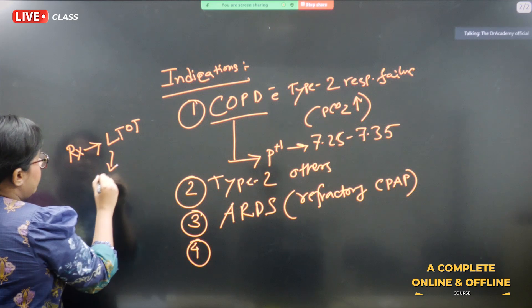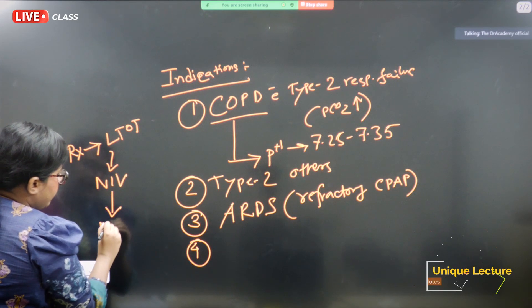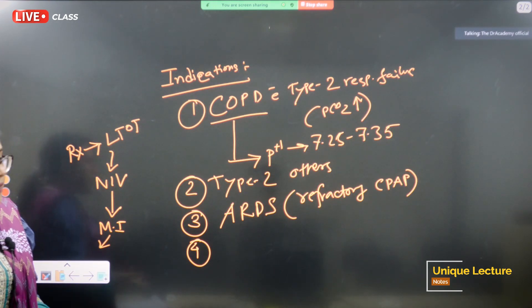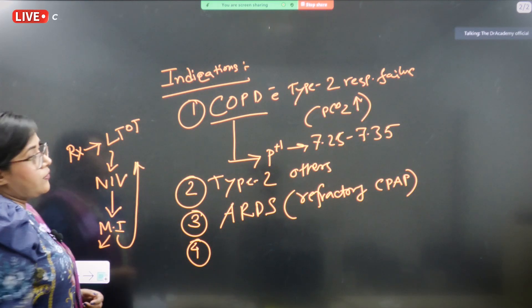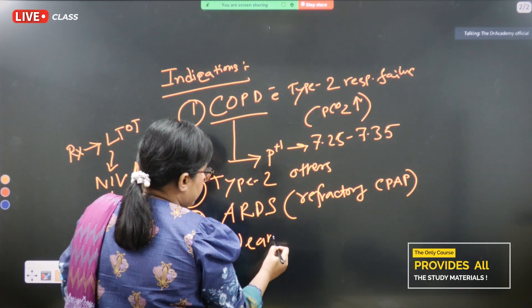So when things are getting worse from drug treatment to LTOT, we can consider non-invasive ventilation. Final stage would be mechanical intubation. If the patient expires, that's an unfortunate case. If the patient reverses back, then this will be the algorithm for weaning from mechanical intubation.